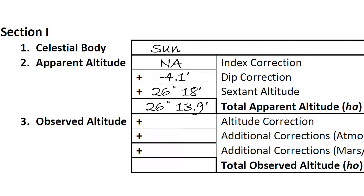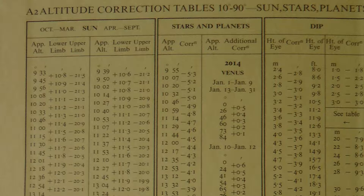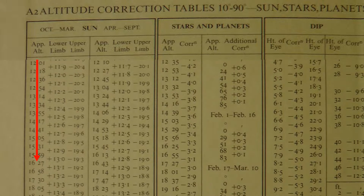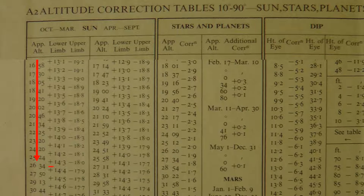In our example, we had the sun at an apparent altitude of 26 degrees and 13.9 arc minutes. We see in our table that this gives two values, one for the lower limb and one for the upper limb.